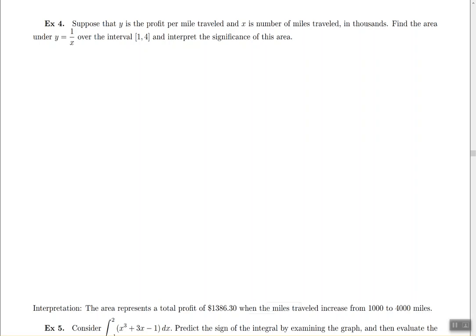So basically we're looking for the area underneath the graph of 1 over x from 1,000 to 4,000. That's why they're writing 1 and 4. And then interpret the significance of this area.